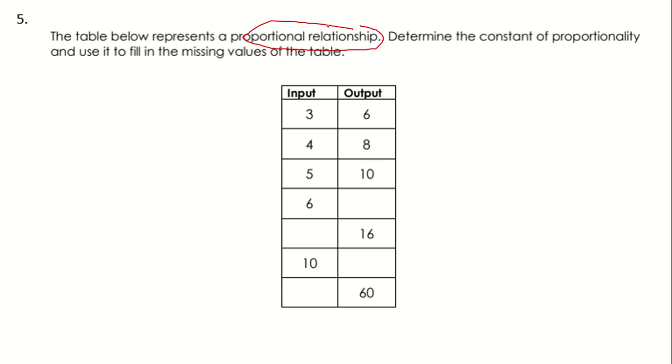This is told to us, we know that our COP is going to exist and that our unit rates are all going to be the same. So let's determine the constant of proportionality and use it to fill the missing values of the table.